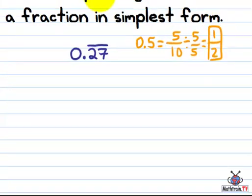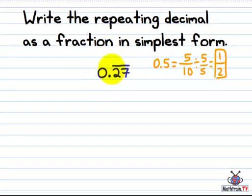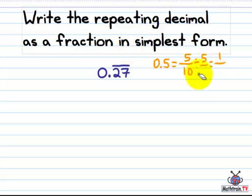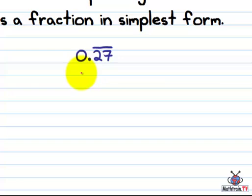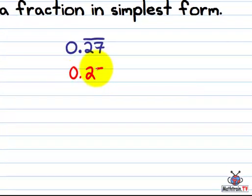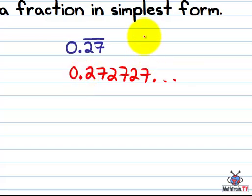So we've learned that already. But now we have a repeating number, this repeating decimal. So we have to do something a little different. This number is really actually 0.272727 and so on because that bar right here tells us that these two digits continue on and on.